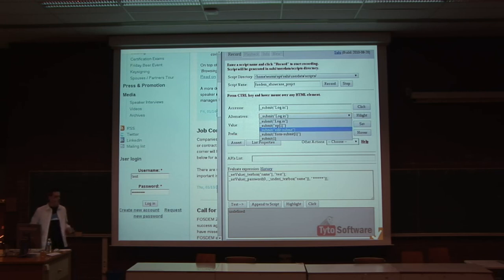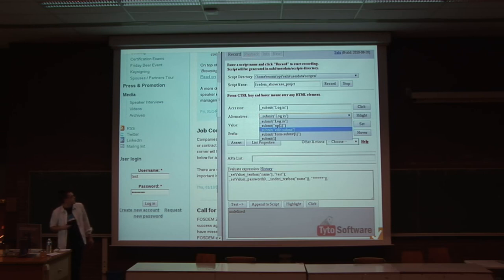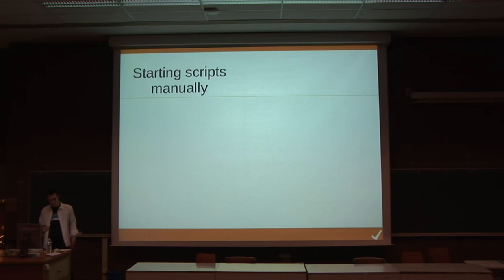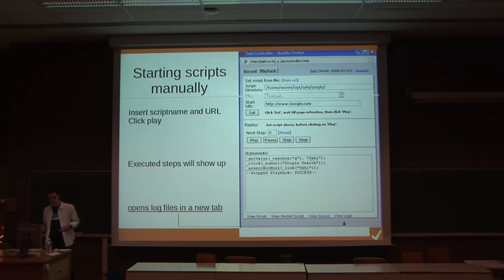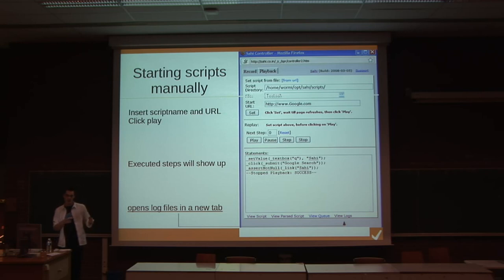When you stop recording, you just click stop and your test script is created — this is just a plain text file. Running the test manually is even easier. You just click on the playback tab, insert the script name and the website you want to test, and press play. Then you lean back and watch the Zahi controller do all the work. You will see in the other browser tab, where your website is, how every step is executed — and you can watch and say everything's working fine.